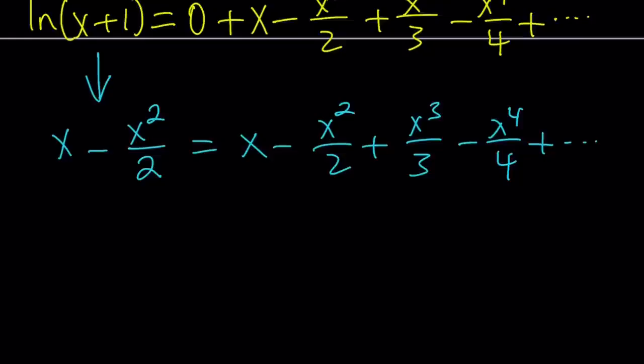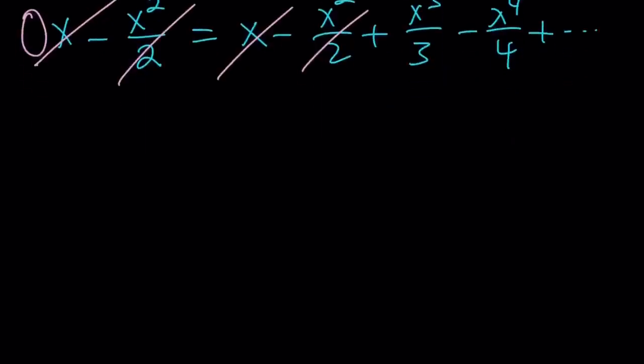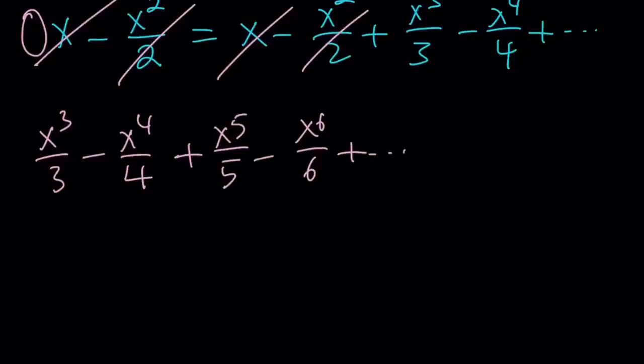We're going to simplify this. These two cancel out. These two cancel out, leaving us with a 0 on the left-hand side, and a giant infinite polynomial on the right-hand side. So we can write it like this: x³/3 minus x⁴/4 plus x⁵/5 minus x⁶/6 and so on. It goes on like this, but that's equal to 0.